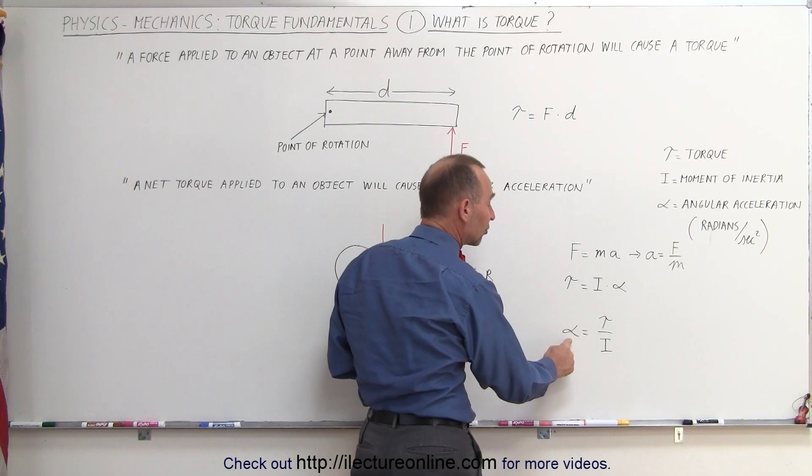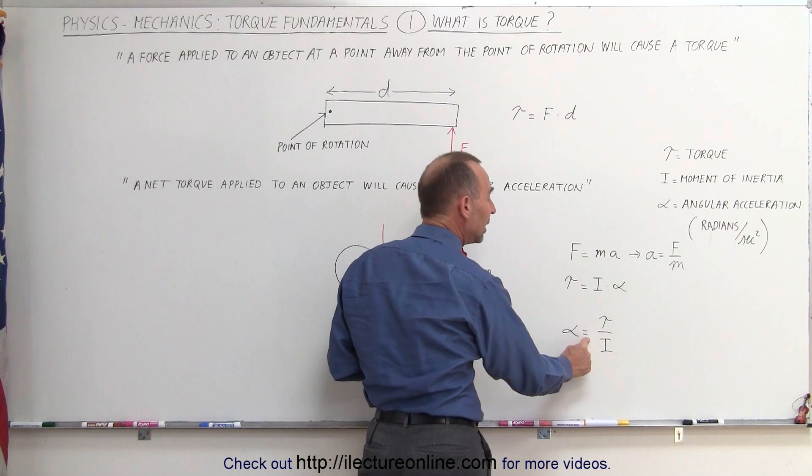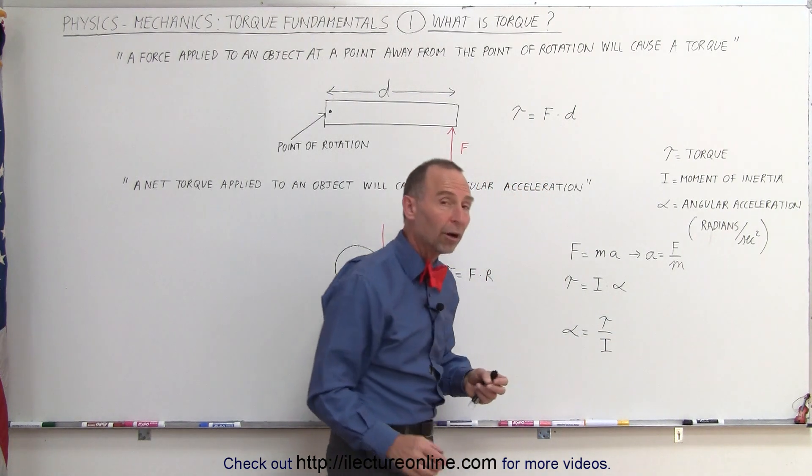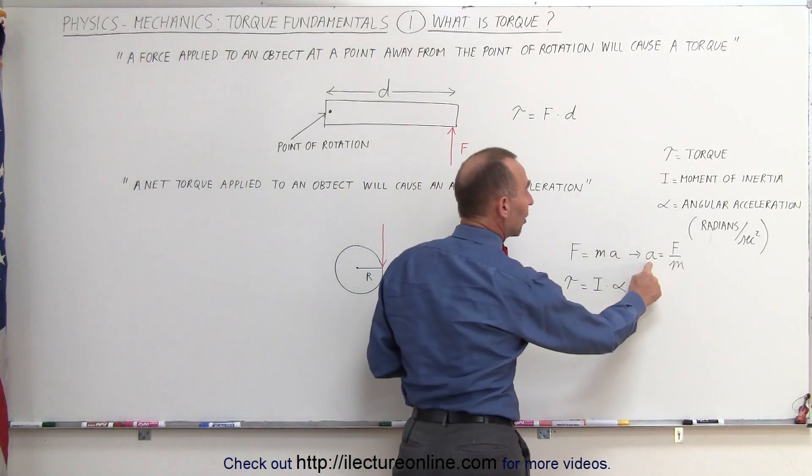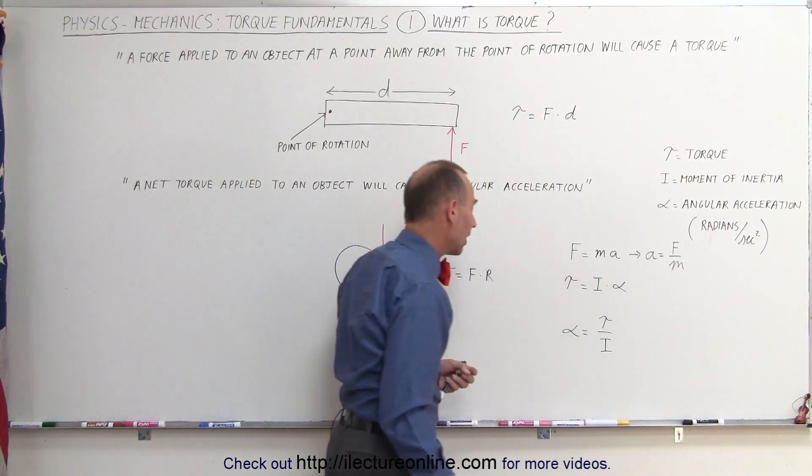If you solve this equation for the angular acceleration, you can see that the magnitude of the acceleration is simply equal to the torque applied divided by the moment of inertia of the rotating object. Just like the linear acceleration is equal to the ratio of the force divided by the mass of the object.